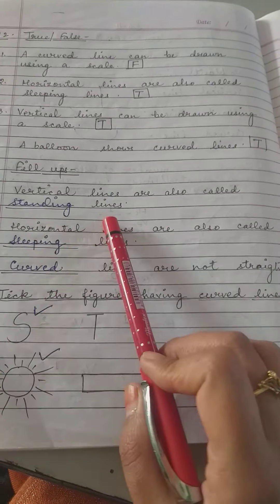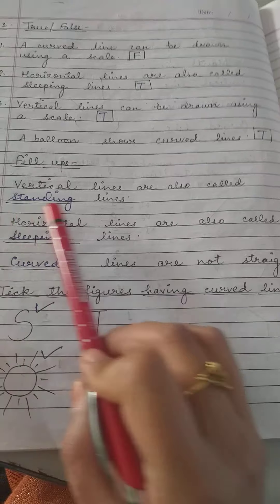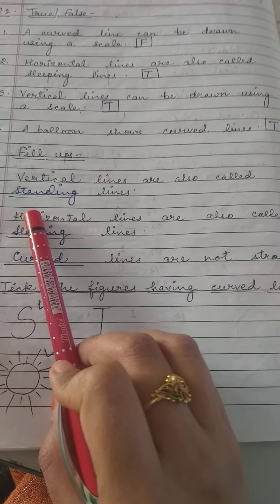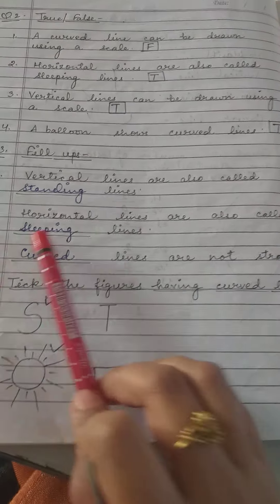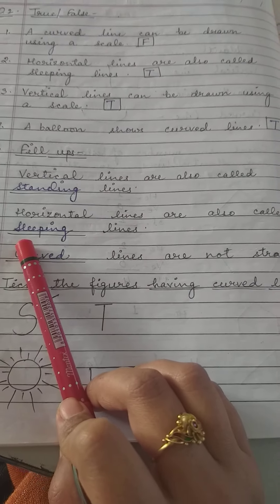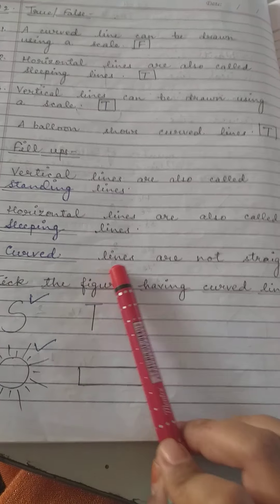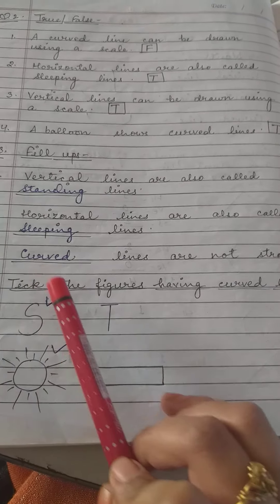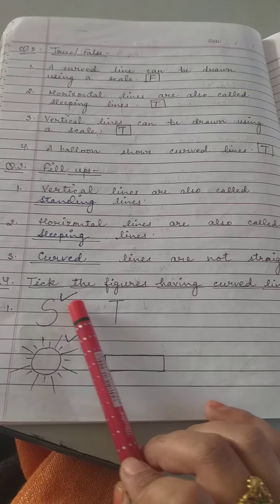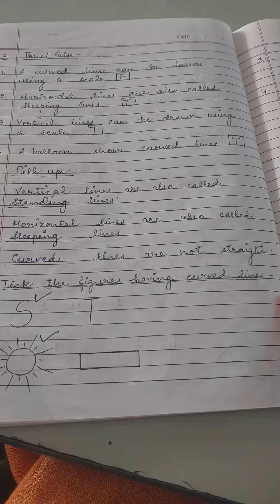Vertical lines are also called standing lines - true. Horizontal lines are also called sleeping lines - true. Curved lines are not straight - true. The last question is: tick the figures having curved lines.